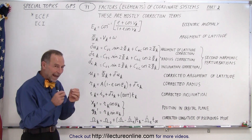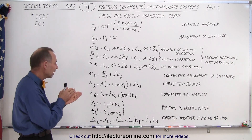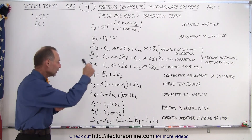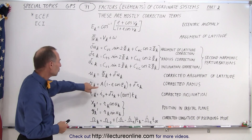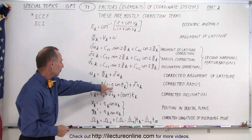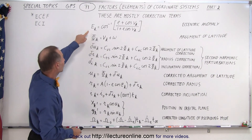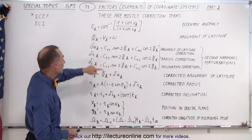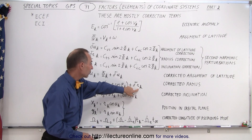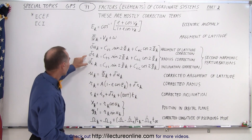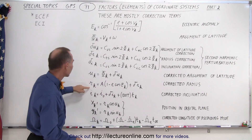We also want to have a very accurate sense of what the radius is — the distance to the satellite — and notice that this is a constant change. We have the eccentricity involved here, we have E sub K which is calculated above, and then we have the small change in the radius that's accounted for, so that's included in this calculation.